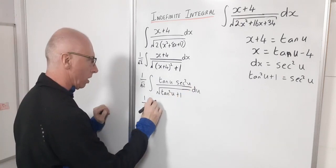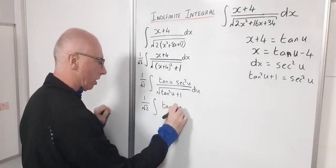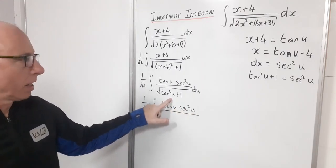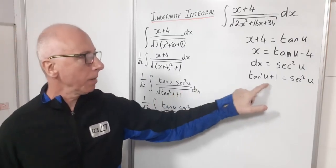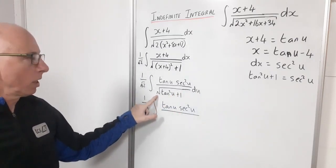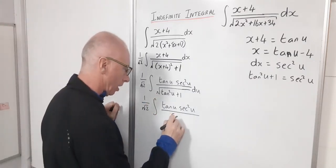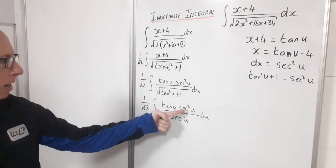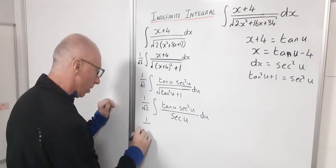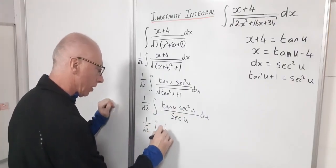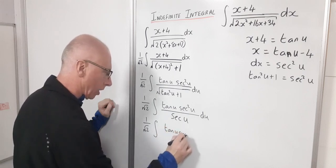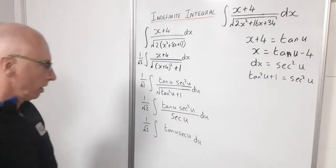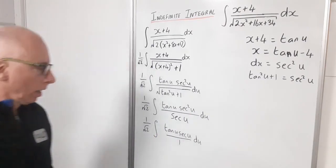So 1 over root 2 tangent u secant squared u. And then here secant squared u that will be substituting in there by this trig identity but then it's in a square root. So then I would just be left with secant of u. Okay well that will cancel out with one of these. So let's rewrite that. So 1 over root 2 the integral tangent u and secant u, and then that's just du. Let's just leave it as a fraction for now.